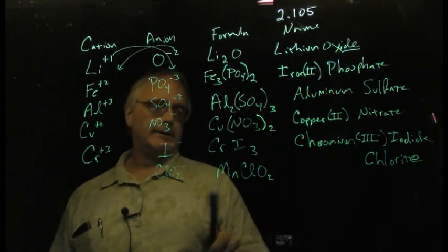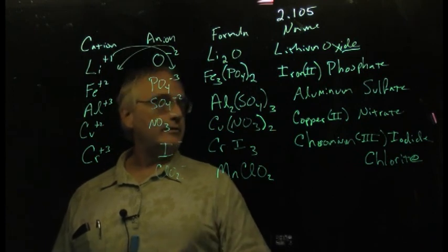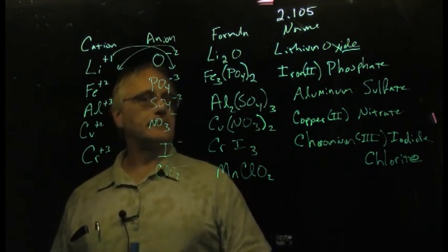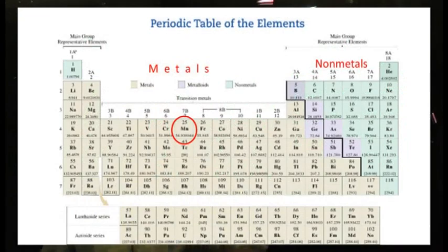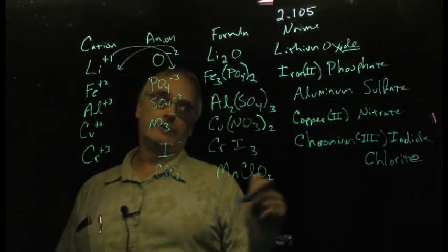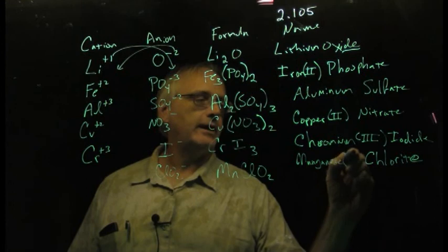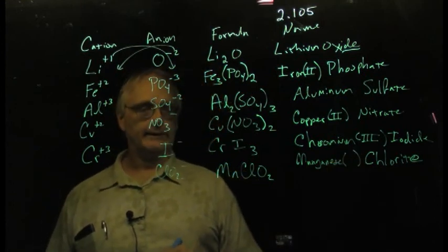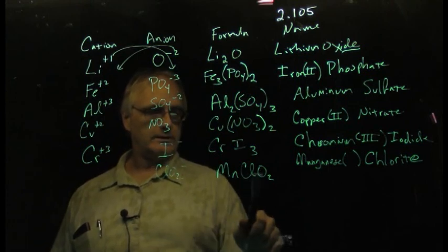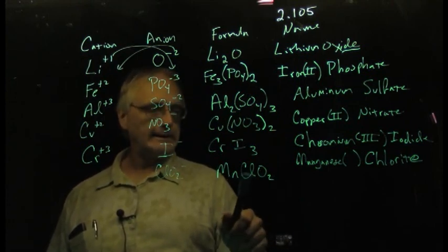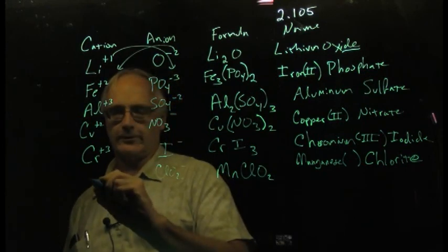Then we got this beast here. Now Mn - this one is a common one to get screwed up. This is manganese, not magnesium. Be a little bit careful. They have similar names. This is manganese. Manganese, it is a transition metal. Therefore manganese, and we're going to have to put the Roman numeral in. The question is, what Roman numeral? MnClO2.